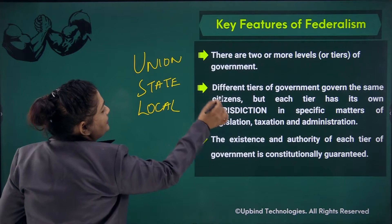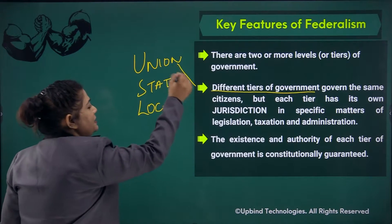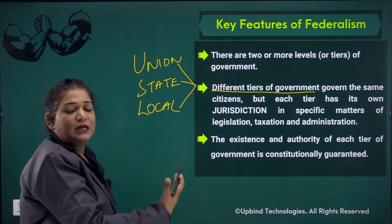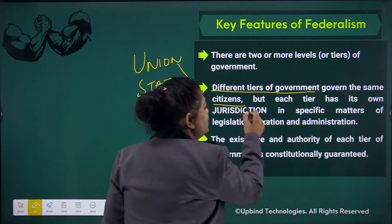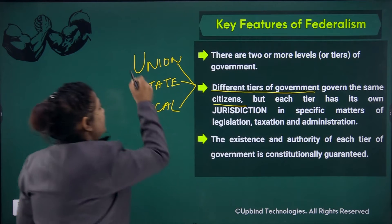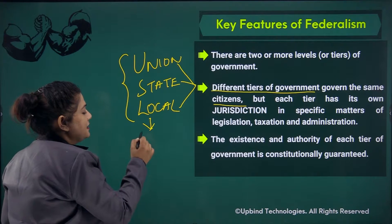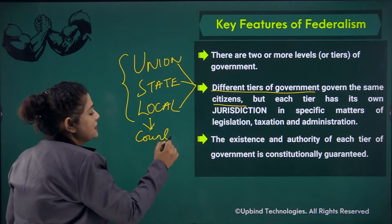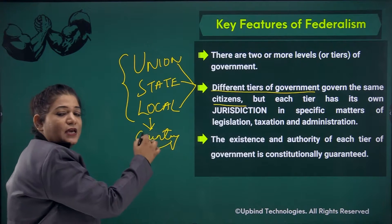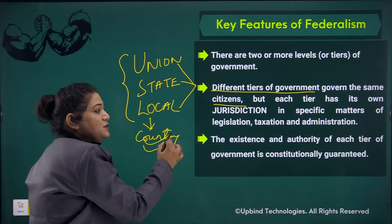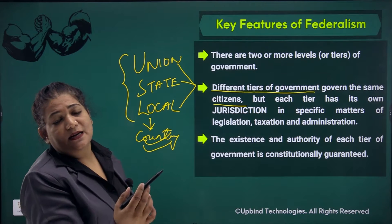Yani, agar different tiers hain government ke — that means union, state and local — is different tier mein ye jo government hai, teeno government milke, ek hi country ke logon ko serve kar rahi hai. Yani citizens bhi same hain, unki cultures bhi same hain, sab kuch unka same hai ek country mein.